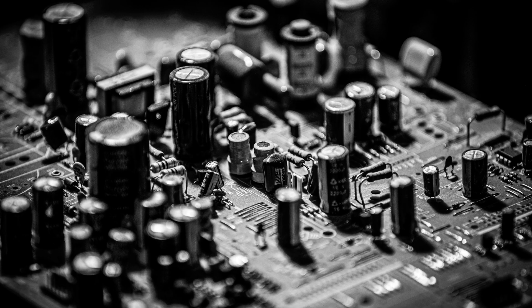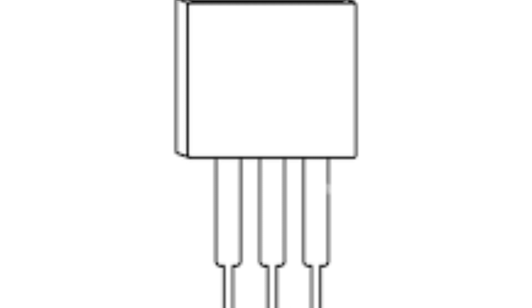Disadvantages of the 2N2222 transistor include: Limited Power Handling — the transistor has a limited maximum collector current and voltage, which restricts its use in high power applications. Temperature Sensitivity — the transistor's electrical characteristics can be affected by changes in temperature, which can impact its performance in some applications. Limited Frequency Response — it has a limited high frequency response, making it unsuitable for high frequency applications. Requires Biasing — the transistor requires a bias voltage applied to the base terminal to control its operation, which can make circuit design more complex.